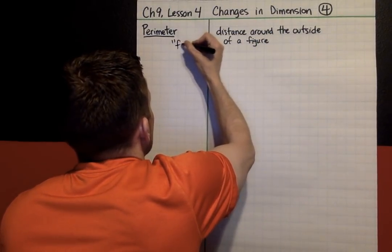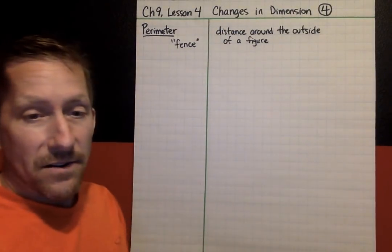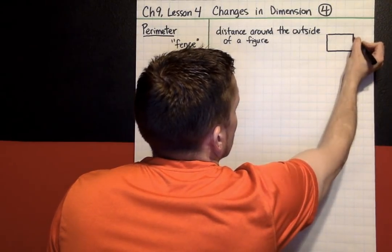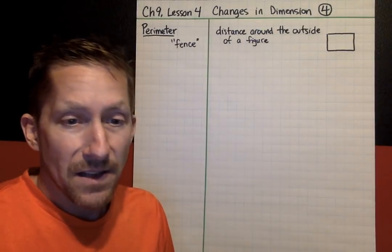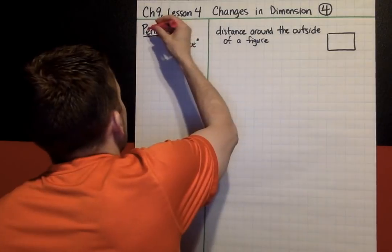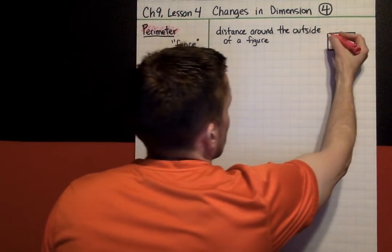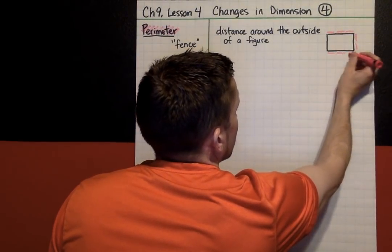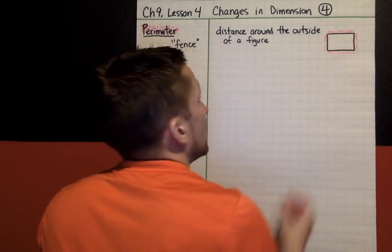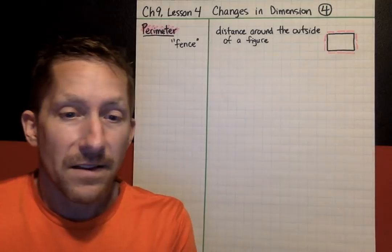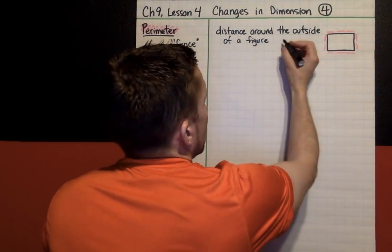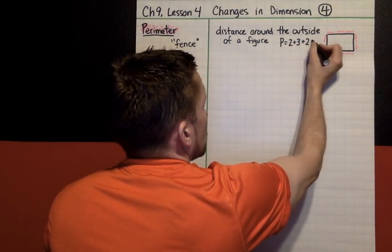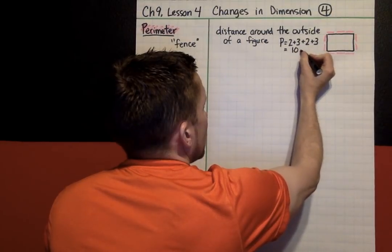It's like a fence. Here is a quick example — a simple rectangle, a 3 by 2 rectangle. The perimeter of this rectangle would be how many units of fence does it take to go around this figure. I'm going to use a highlighter: 1 unit of fence, 2, 3, 4, 5, 6, 7, 8, 9, 10. So the perimeter — how I found it — was 2 plus 3 plus 2 plus 3, which came to 10 units of fence.